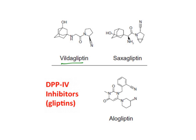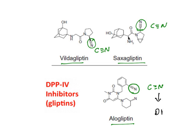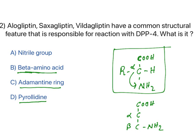Looking at the structures: vildagliptin has a nitrile group, saxagliptin has a nitrile group, and alogliptin also has a nitrile group. All three contain a nitrile group. This nitrile group combines with the catalytic serine moiety of DPP-4, forming a bond that inhibits the enzyme's function. The answer is the nitrile group.